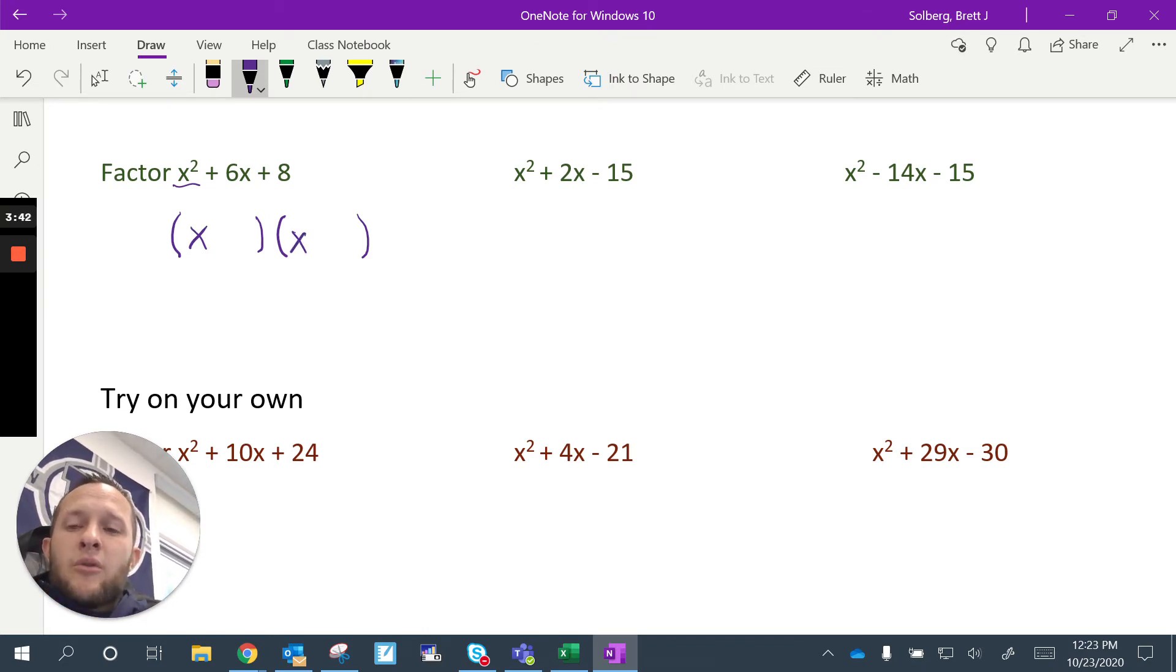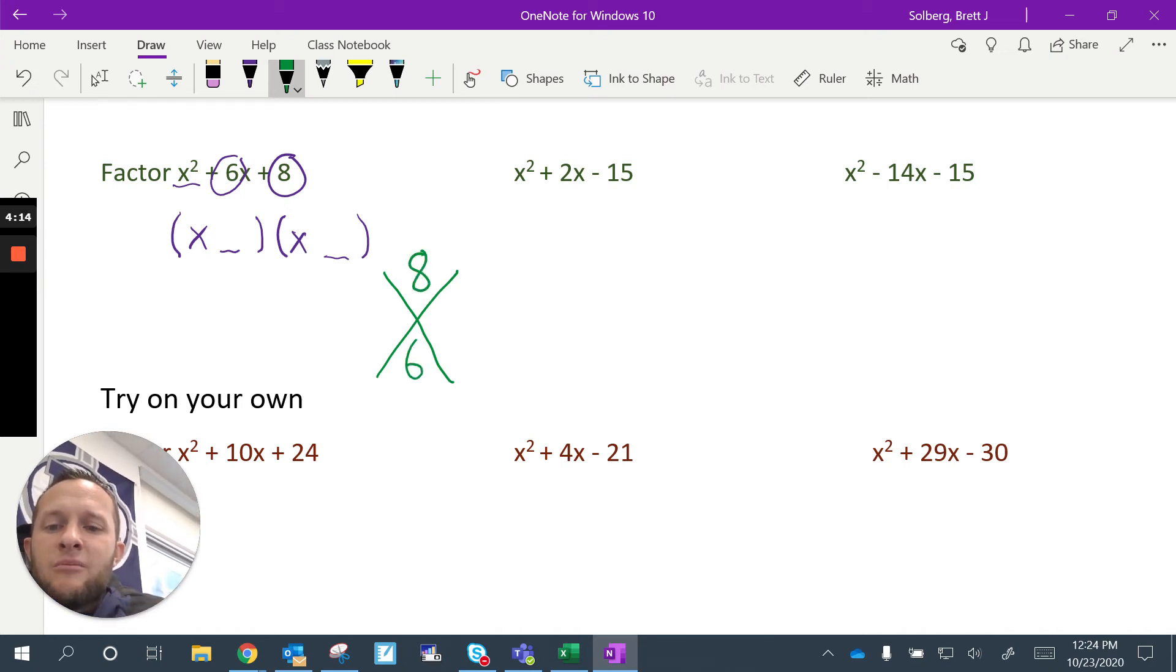What I need to figure out, though, is what are the two numbers that go in here? Well, if you remember our relationship before, how did we get that number there? How did we get the 8? And it was the two numbers multiplied. These two numbers multiplied to give you 8. How did we get the 6? The two numbers added to give you 6. So what I do is I make this little x. And I think, okay, I'm looking for two numbers. The numbers multiply to give me 8 and they add to give me 6.